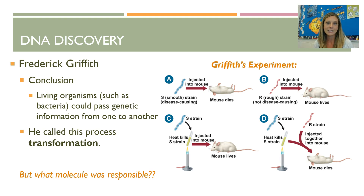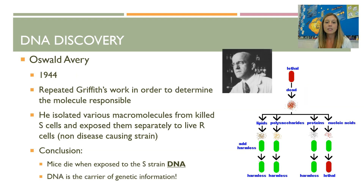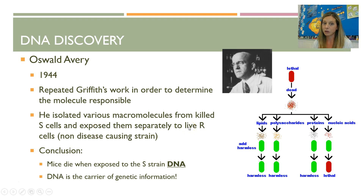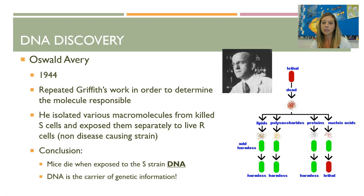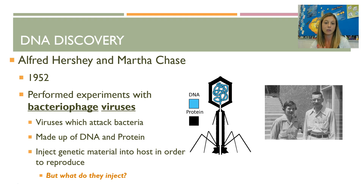But the question Griffith did not answer was: what is the molecule responsible for carrying genetic information? A scientist named Oswald Avery came along in 1944 and repeated Griffith's work. He isolated various macromolecules from the heat-killed S cells — lipids, sugars, proteins, and nucleic acids — and exposed them separately to live R cells. He found that when he added the lipids, sugars, and proteins, the mice lived, but when he added the nucleic acids, the mice died. He concluded that DNA is the carrier of genetic information.